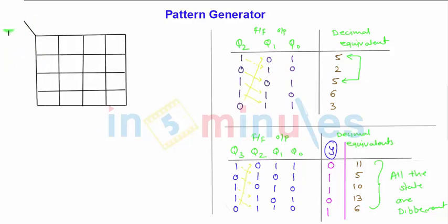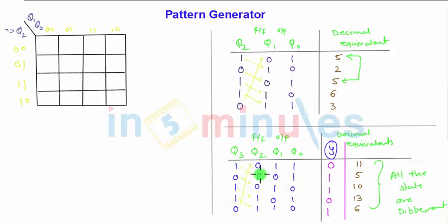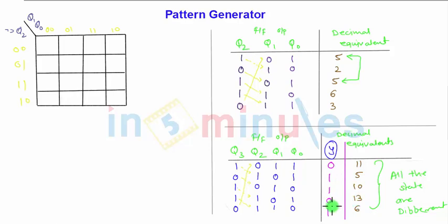The K-map has Q3, Q2, Q1, Q0 with bit positions 00, 01, 11, 10. For these 16 combinations, only 5 states are present. The output values are: position 11 → output 0, position 5 → output 1, position 10 → output 1, position 13 → output 0, and position 6 → output 1.